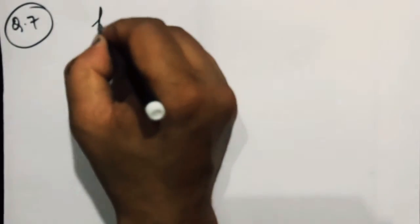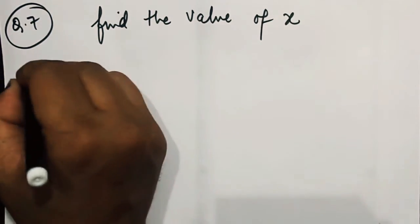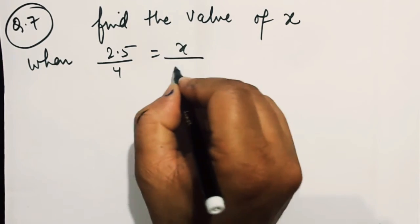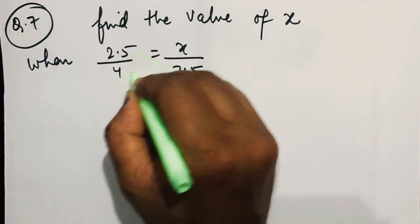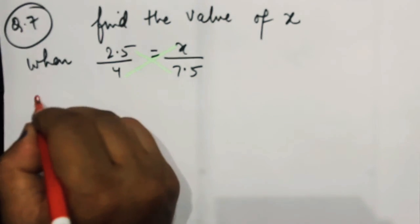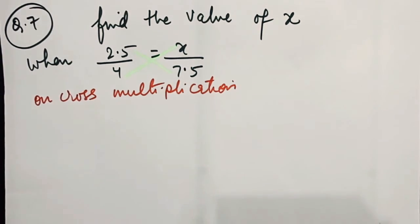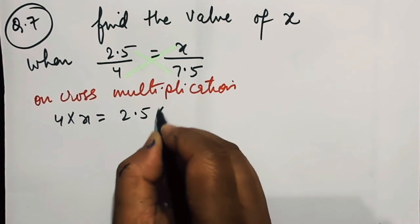Not the same, you can say a little different variety. Since I said miscellaneous sums, these are miscellaneous sums. Therefore you will get a different variety. Find the value of x when 2.5 by 4 is equal to x by 7.5. What's the big deal in this? If you cross multiply it, you will get the values in a line form.